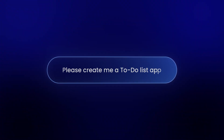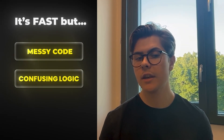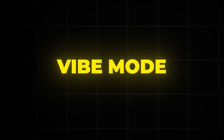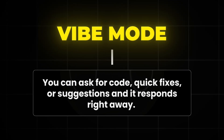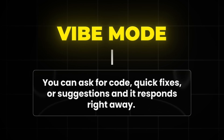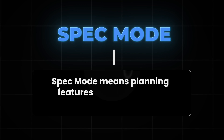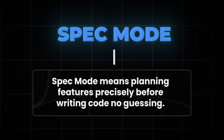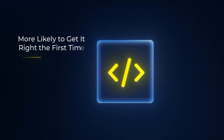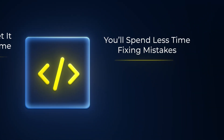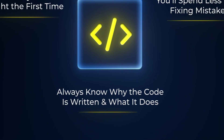Step 1: Why is Kiro different? Most AI tools just give you code when you ask for it. You prompt the AI and it spits something out and you hope that it works. This might feel fast but it usually leads to messy code, confusing logic, and a mountain of bugs that you will need to fix later. Kiro changes that by giving you two clear modes. The first is vibe mode — your basic chat and code experience just like most AI tools. You can ask for code, quick fixes, or suggestions and it responds right away. It's useful for smaller stuff but not for building real features. Then there's spec mode. This is where Kiro is different. Spec mode stands for spec-driven development, and instead of just guessing what you want, Kiro helps you plan exactly what your feature needs before writing any code. This means you are more likely to get the right code the first time, spend less time fixing mistakes, and always know why the code is being written and what it's supposed to do.